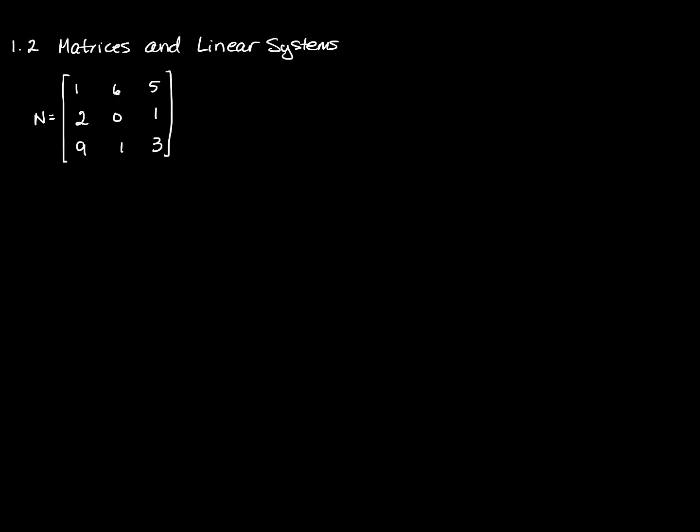Let's start with a matrix N, where the first row is 1, 6, 5, the second row is 2, 0, 1, and the third row is 9, 1, 3.